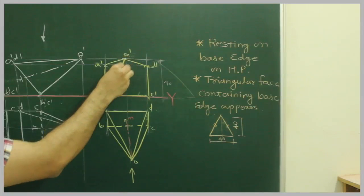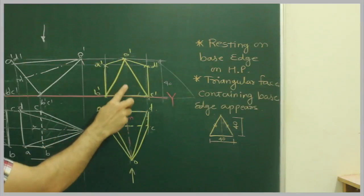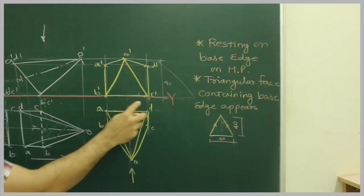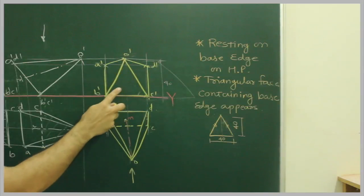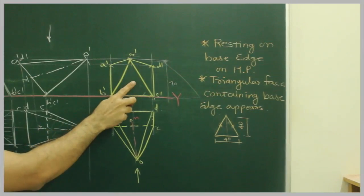So we can draw O dash D dash, we can draw O dash B dash and O dash D dash. So this is the triangular phase what we were talking about, base 40, height 40. This is the triangular phase B, C, O which will appear as an isosceles triangle in elevation.